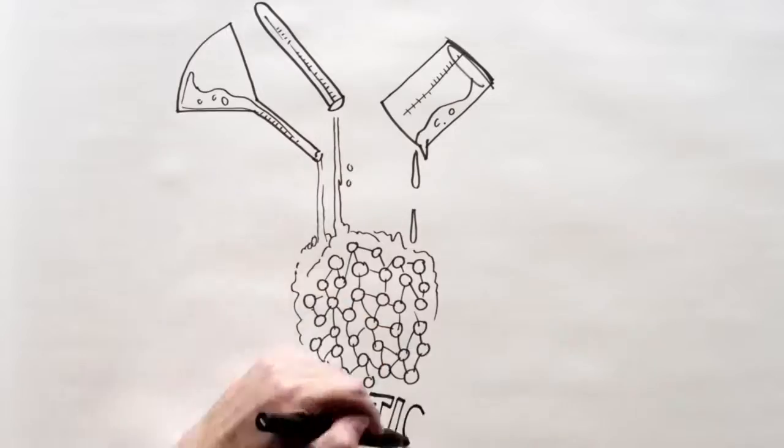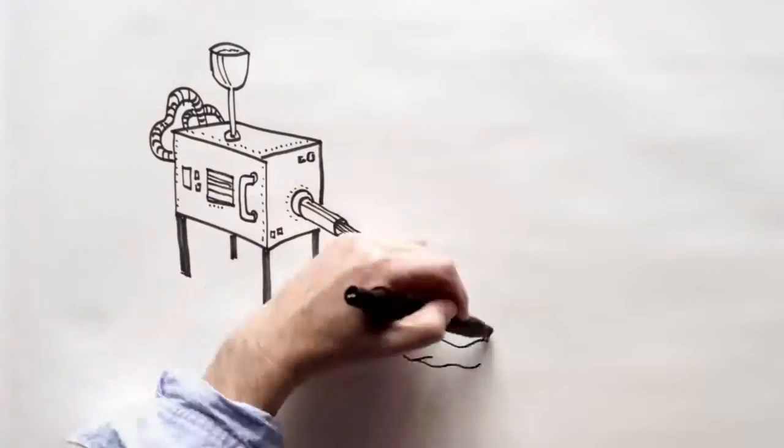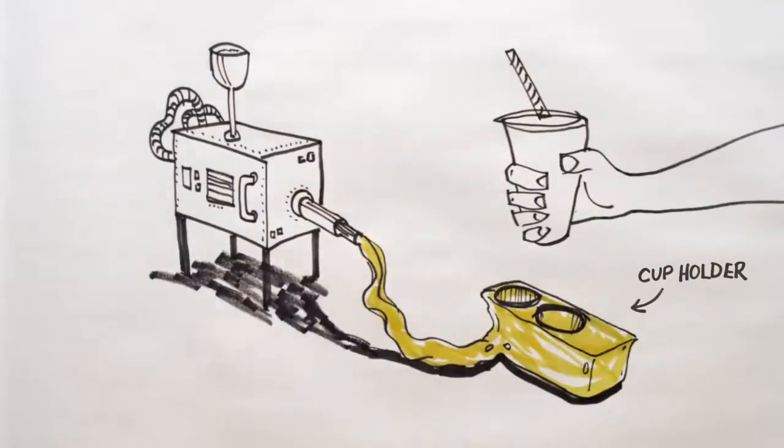And now we have a plastic. We compound it with other additives. We injection mold it into the shape of the part that we want.